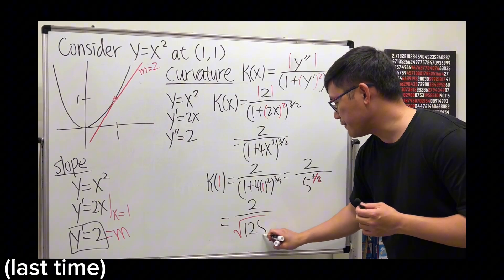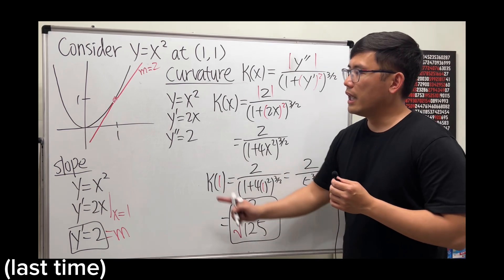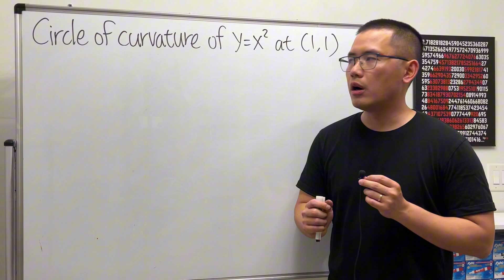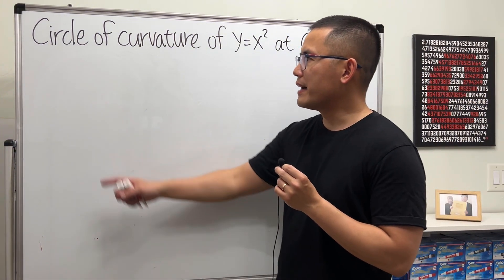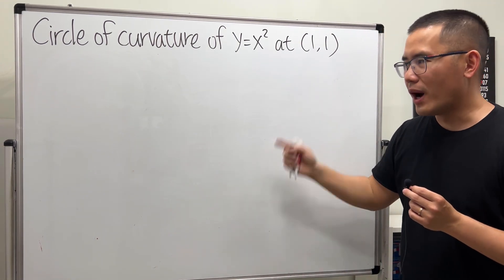which is 125. So this is the curvature at that point. Last time we went over the curvature of y equals x squared at (1,1). Today, we will find the circle of curvature of y equals x squared at (1,1).